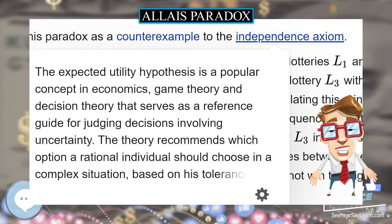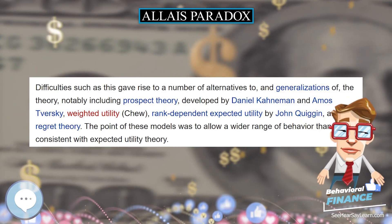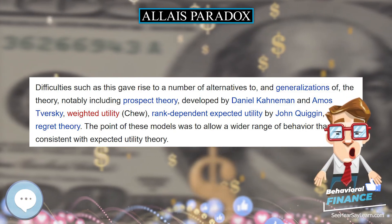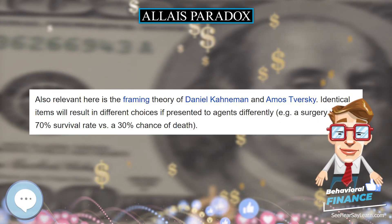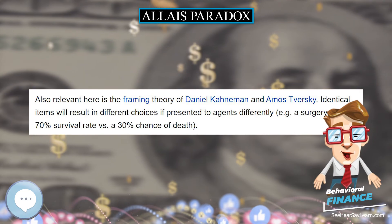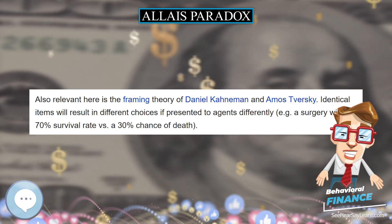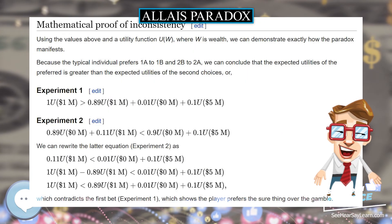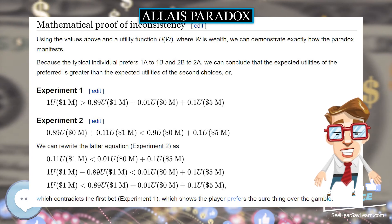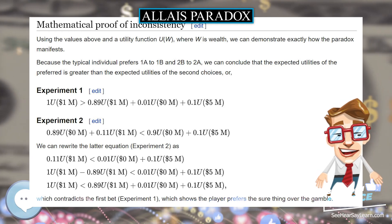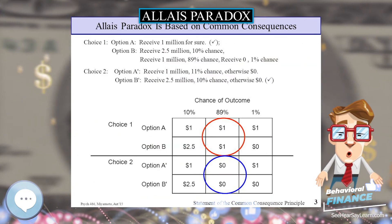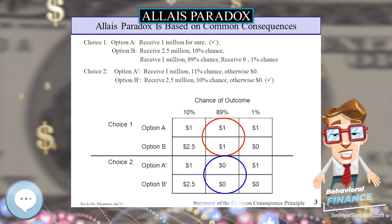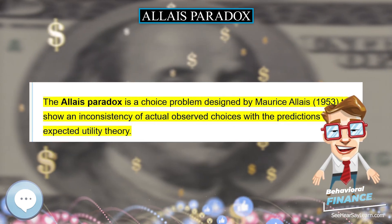Mathematical proof of inconsistency: using the values above and a utility function u(w), where w is wealth, we can demonstrate exactly how the paradox manifests. Because the typical individual prefers 1A to 1B and 2B to 2A, we can conclude that the expected utilities of the preferred choices are greater than the expected utilities of the second choices.